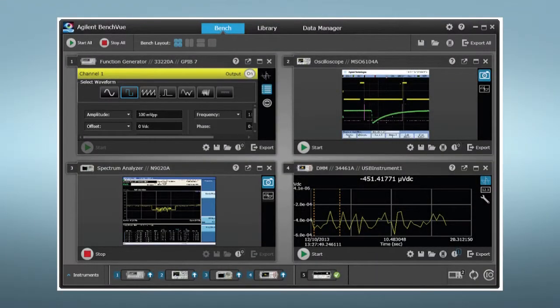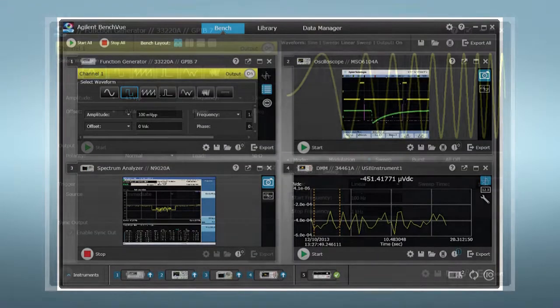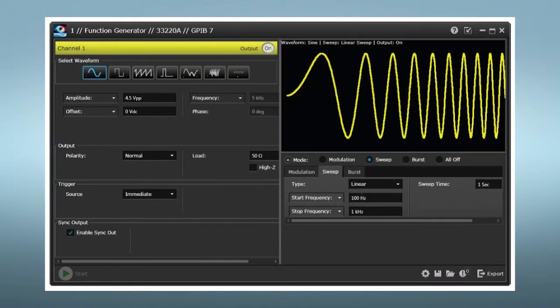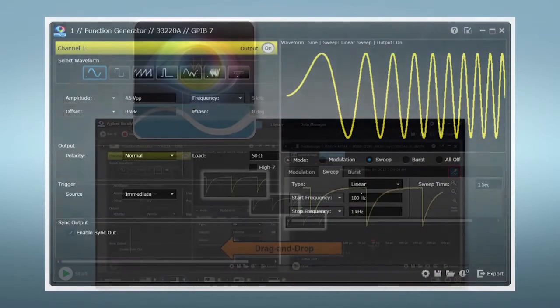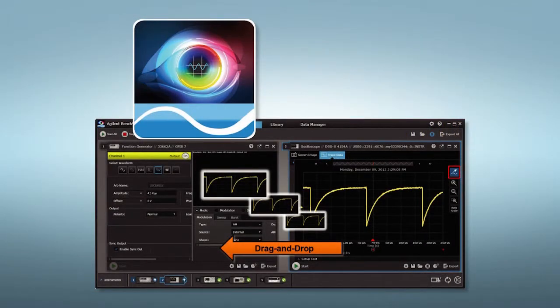And finally, you can control your 33600 series generators from Agilent's free BenchView software, using it to set up waveform properties and load custom arbitrary waveforms from files. Alternately, you can drag and drop waveforms from a scope into the generator.